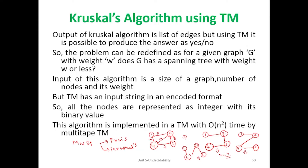How can we implement this concept in a Turing machine? The output of Kruskal's algorithm is a list of edges, but a Turing machine produces answers only in yes/no format — it cannot produce a calculation of minimum edges directly. To solve this, the input should include graph size, number of nodes, and their weights, all converted to binary representation. The visited nodes should also be in binary notation. This algorithm can be implemented with the help of a multi-tape Turing machine.